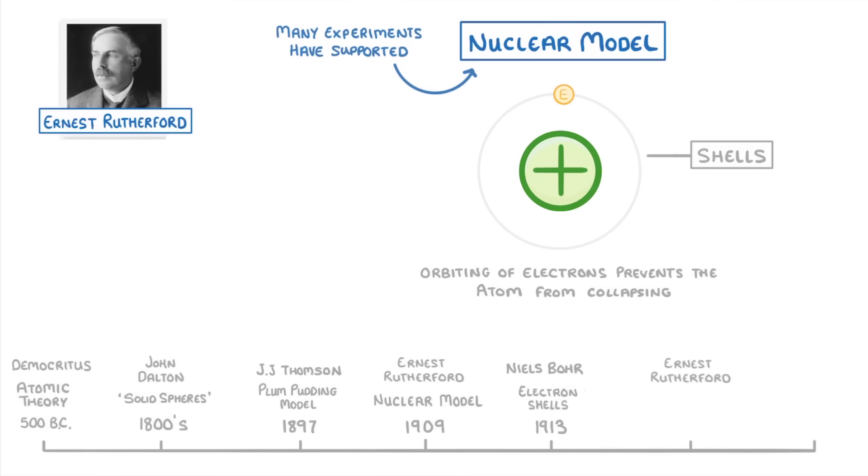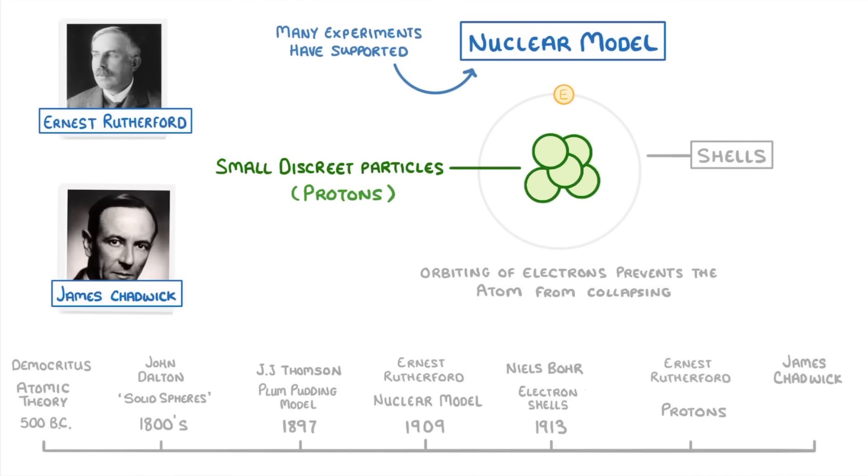Further experiments by Rutherford found that the positive charge in the nucleus is actually made up of small discrete particles, which we now know as protons. And a short while later, a guy called James Chadwick provided evidence for neutral particles in the nucleus, which we now call neutrons.